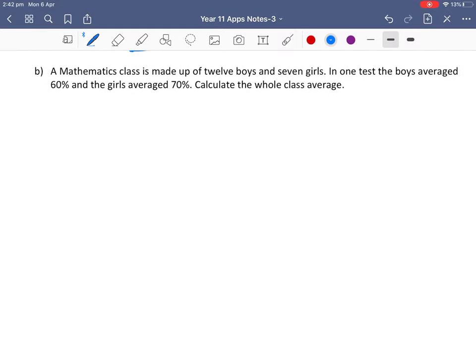Question B: A class of 12 boys and 7 girls. Now the boys get 60% and the girls get 70%. Calculate their whole class average.